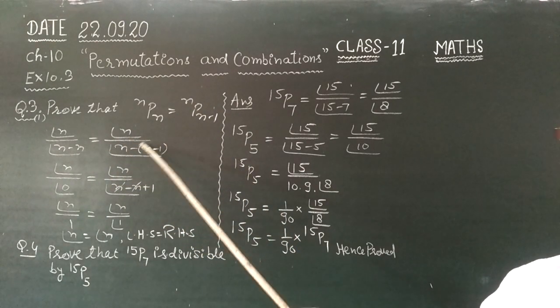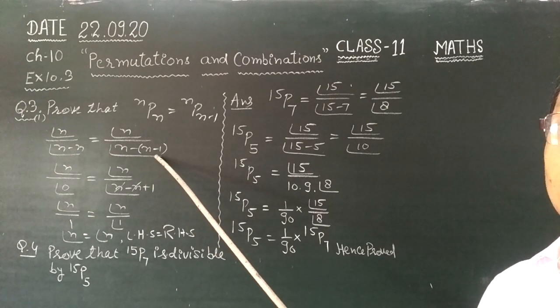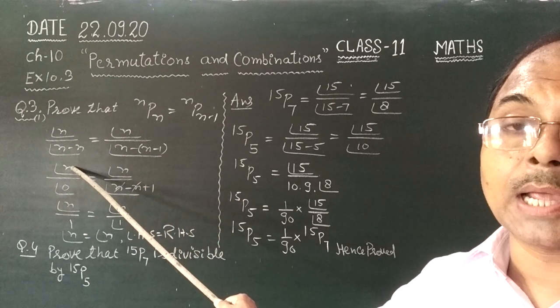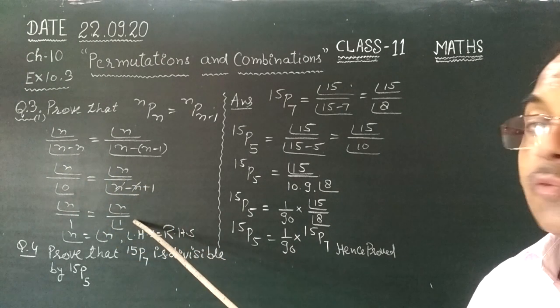Factorial n upon factorial n minus bracket (n minus 1). Upper factorial n, lower factorial 0, upper factorial n, lower factorial 1.